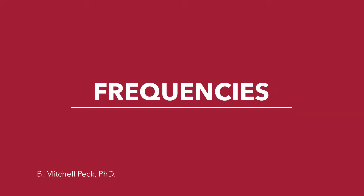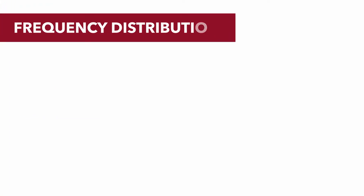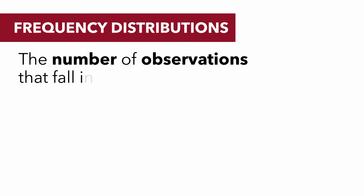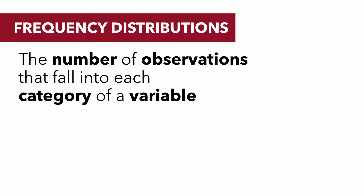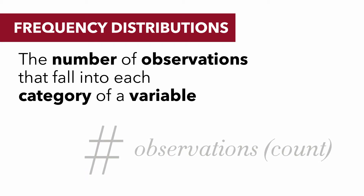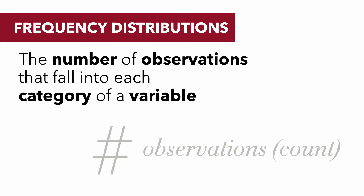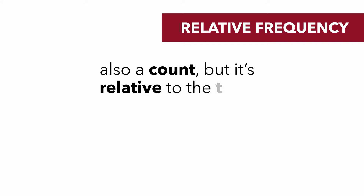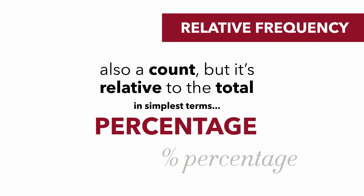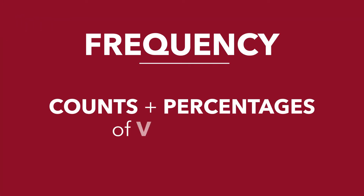In this tutorial we are going to talk about frequency distributions. A frequency is nothing more than the number of observations that fall into each category of a variable. This is simply counting — the simplest, most basic statistic of all. We're also going to talk about relative frequencies. Relative frequency is also a count but it's relative to the total, which in simplest terms is a percentage. So we're going to talk about counts and percentages of variables.